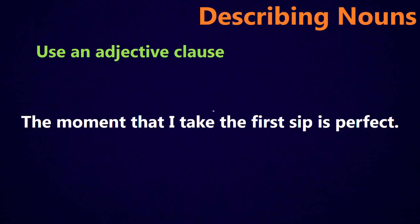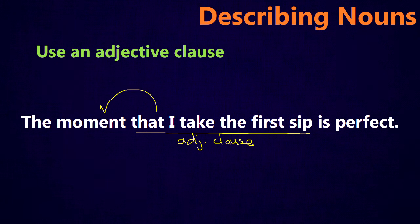Or you can use an adjective clause to describe the noun. For example: The moment that I take the first sip is perfect. That I take the first sip is an adjective clause describing the moment. Without it, you'd just say the moment is perfect — but which moment? The moment that I take the first sip. So the clause gives more information about the noun moment.